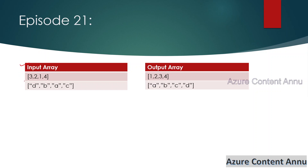For example, the input array has numbers 3, 2, 1, 4 and we want to sort them in ascending order as 1, 2, 3, 4. Similarly, if we have string elements like D, V, A, C, we want them sorted in ascending order as A, B, C, D according to English alphabet characters.